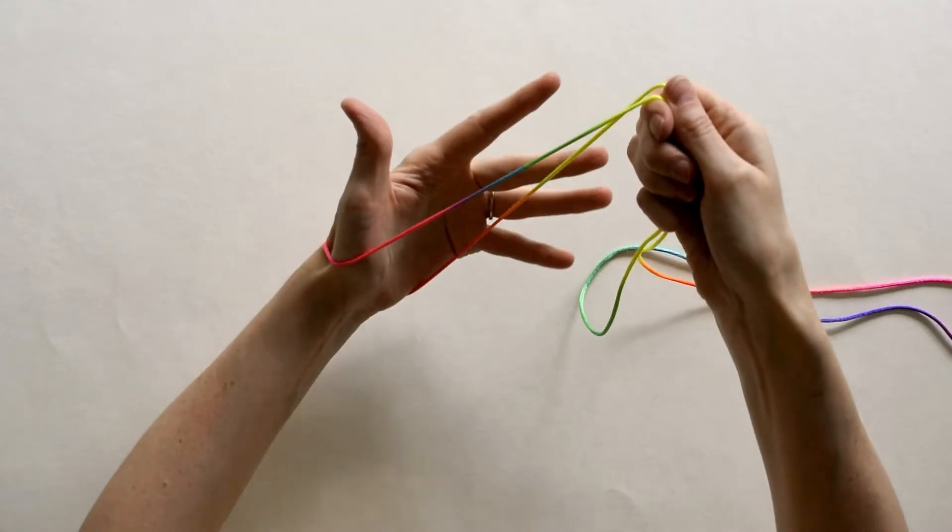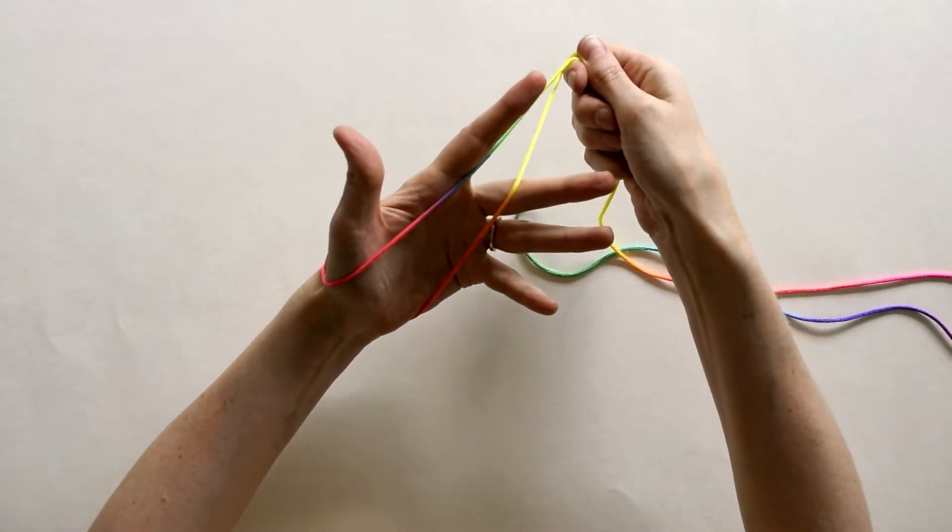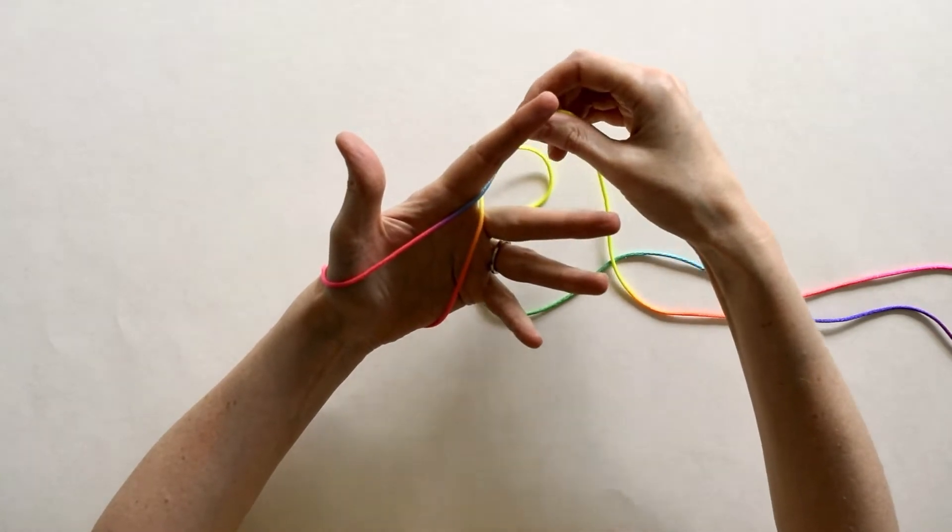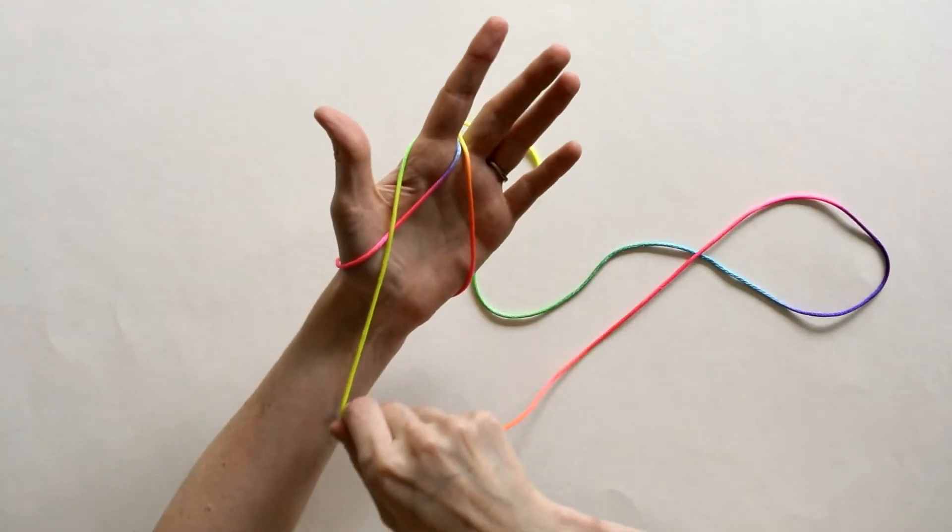Next, hold the two strings and put them between your middle and index finger. The string closest to your index finger, wrap it around your index.